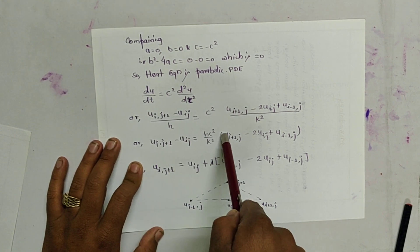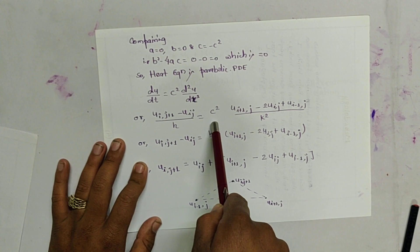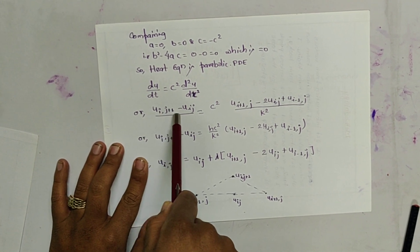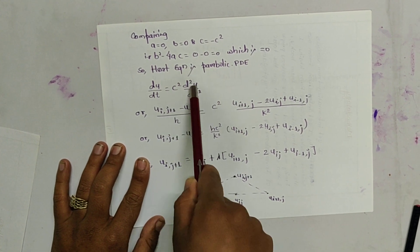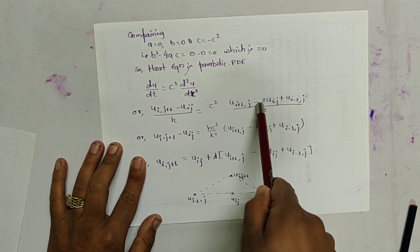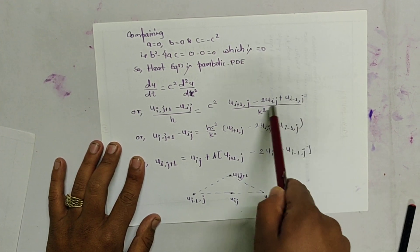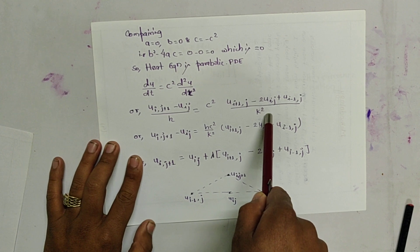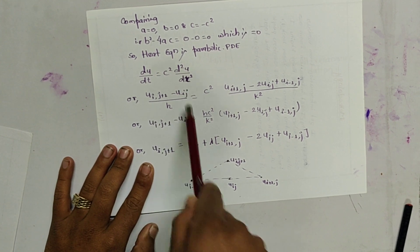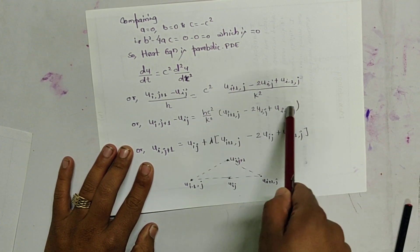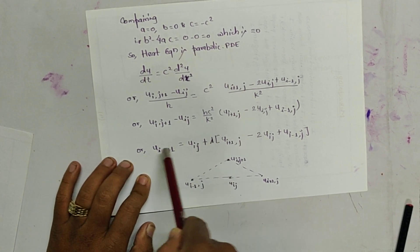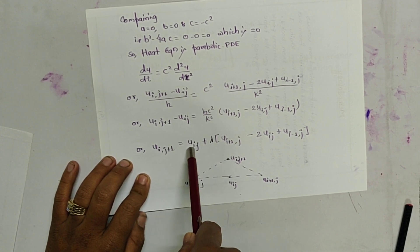Now let us use this formula to derive our equation using the central difference quotient. So du/dt = [u(i, j+1) - u(i,j)] / h, and the second-order derivative term is c² times [u(i+1, j) - 2u(i,j) + u(i-1, j)] / k². By cross-multiplying, we get u(i, j+1) - u(i,j) = (hc²/k²) times the spatial term. Let us define lambda (λ) = hc²/k², so u(i, j+1) = u(i,j) + λ times that term.